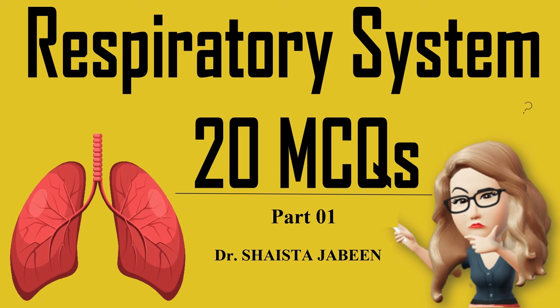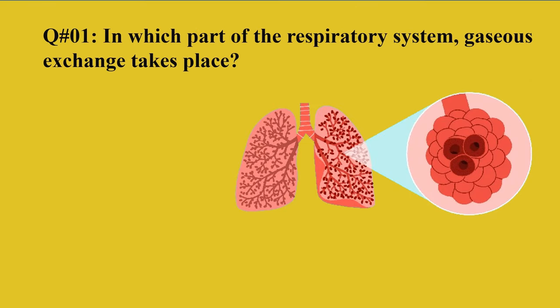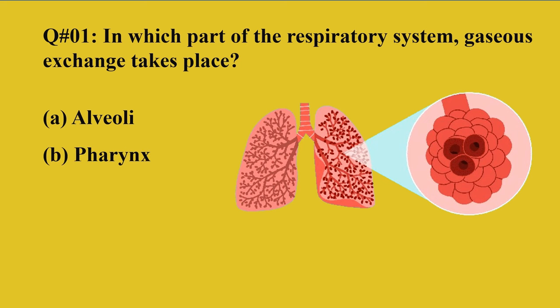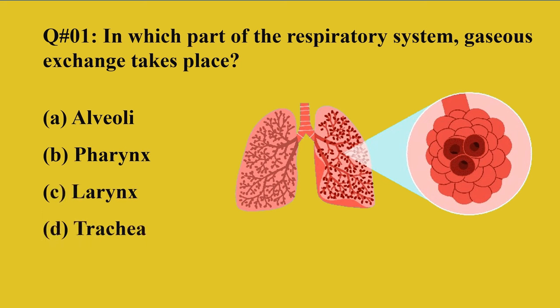Let's learn about some MCQs on the respiratory system. Question number 1: In which part of the respiratory system does gaseous exchange take place? Option A: alveoli, B: pharynx, C: larynx, D: trachea.